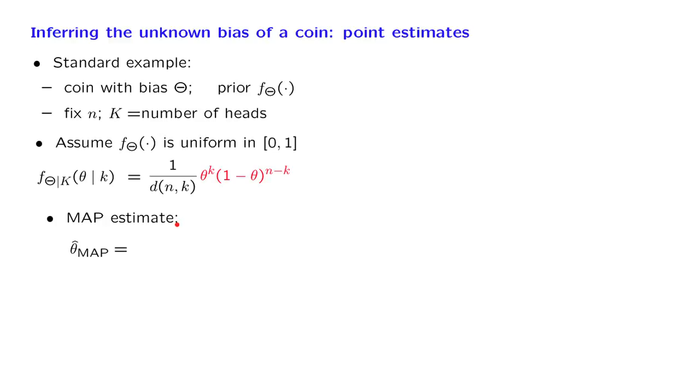How can we find it? By definition, the MAP estimate is that value of theta that maximizes the posterior, the value of theta at which the posterior is largest. Now, instead of maximizing the posterior, it is more convenient in this example to maximize the logarithm of the posterior. And the logarithm is k times log theta plus n minus k times the log of 1 minus theta.